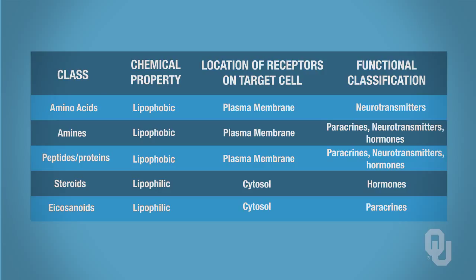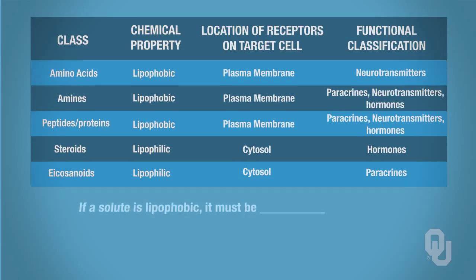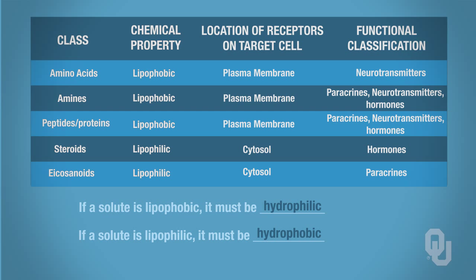This table is a great table, but there could be a lot more information that could be added to it. As we go throughout the next series of lectures, I would suggest thinking about adding additional columns. For example, as we go through the classes, we're going to go through some general properties, and you may want to add that information to this table as we go along. Keep in mind: if your chemical messenger is lipophobic, it must be hydrophilic, and if it is lipophilic, it must be hydrophobic. That's going to be fundamental for you to remember.